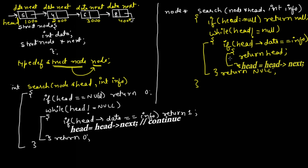If you want to return the position number — how many nodes you traversed before finding the data — you take an integer variable, increment it inside the while loop, and return that number. The return type should then be int instead of node star. This is how you can search in a linked list. Next, let us look at the doubly linked list and the circular linked list.